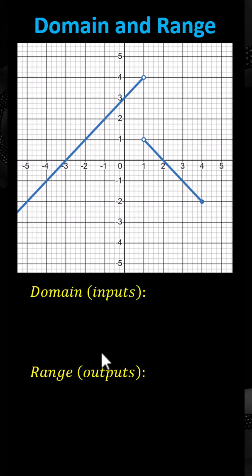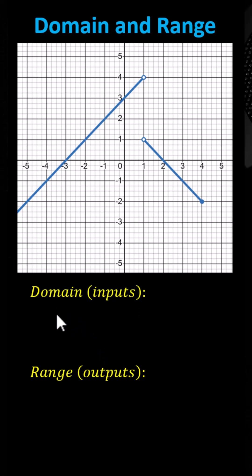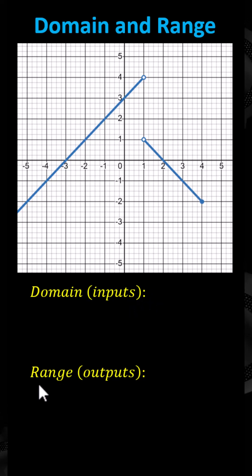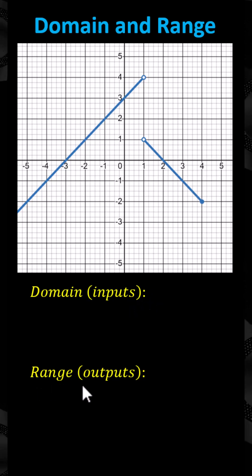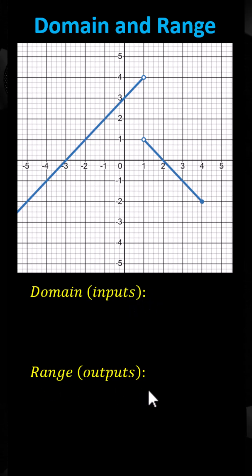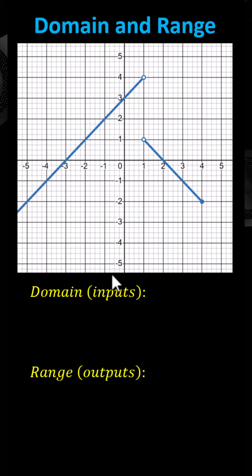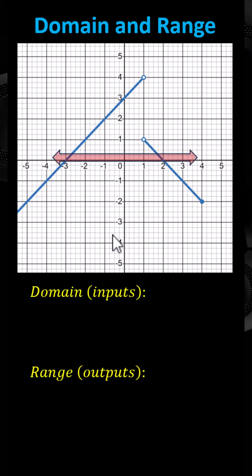We need to determine the domain and range from the graph of the function. Recall the domain is a set of inputs or x values. The range is a set of outputs or y values. To determine the domain, we analyze the graph from left to right, or horizontally.